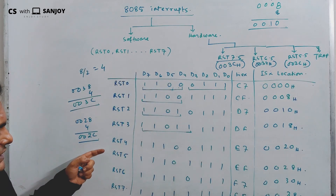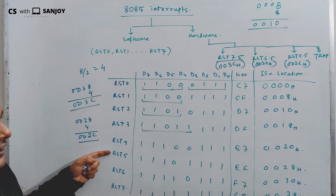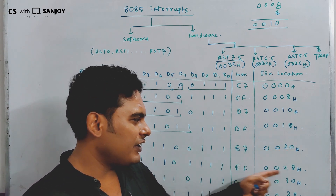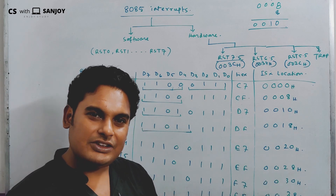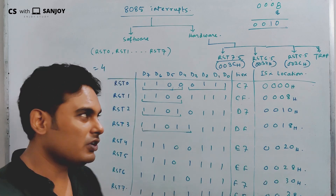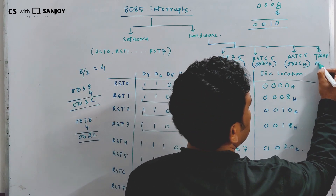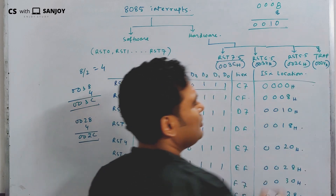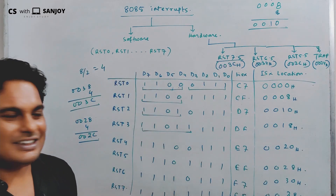TRAP is between RST 4 (0020H) and RST 5 (0028H). So TRAP address is 0020H plus 4 equals 0024H.